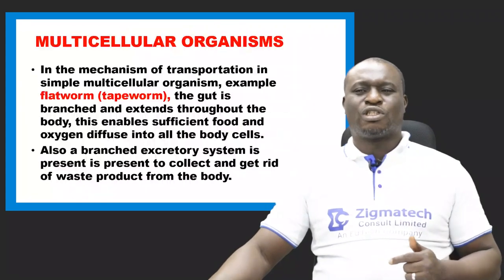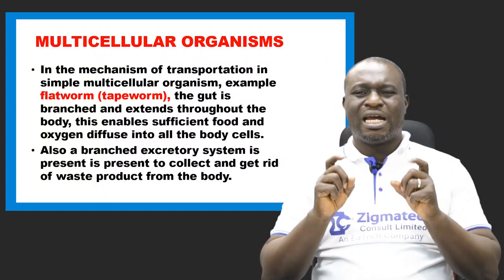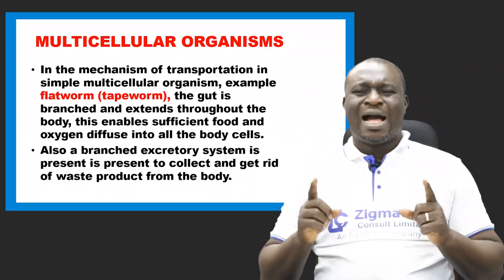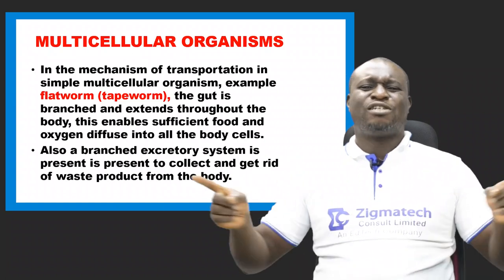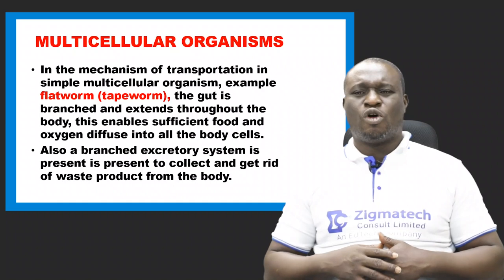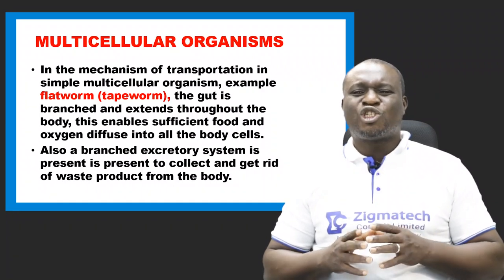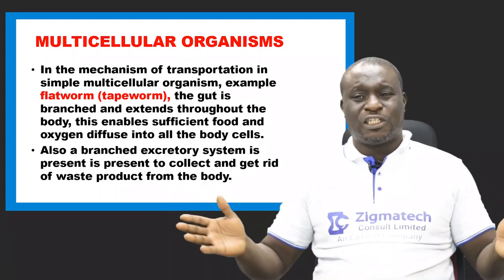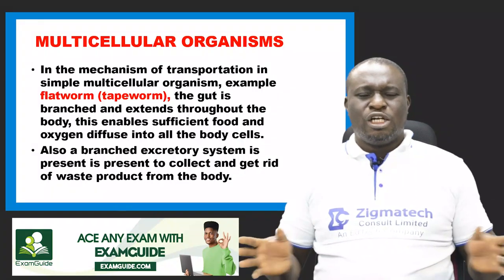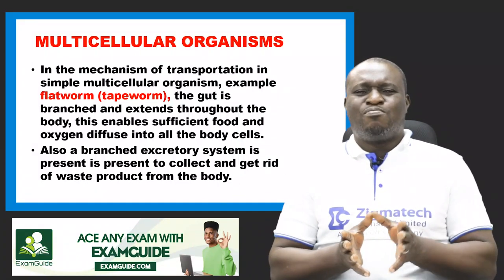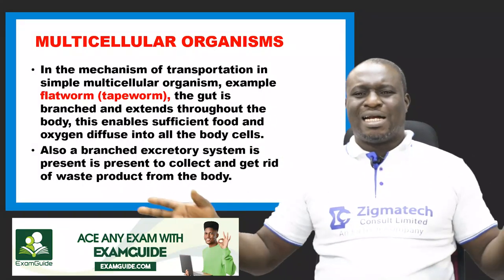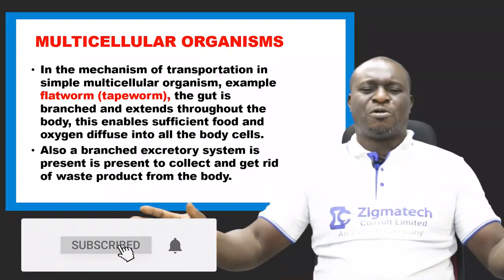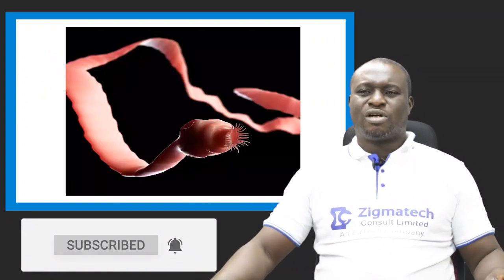In a simple multicellular organism — the tapeworm — the tapeworm has guts that are branched and extend throughout all the body. This helps the tapeworm to sufficiently diffuse food and oxygen into all body cells. This branching of the guts that extends throughout the body of the tapeworm aids in transportation.